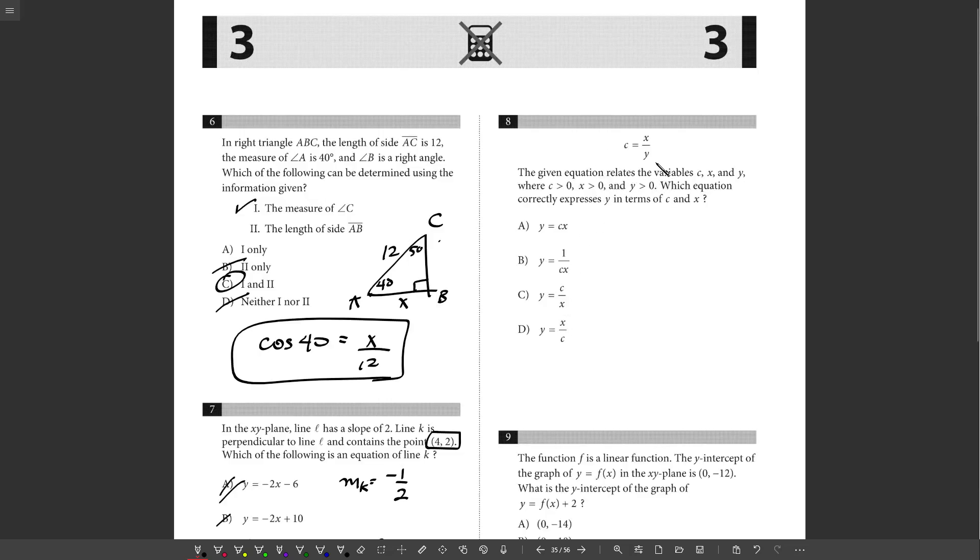Eight, the given equation relates to variables C, X, and Y. These things are true. What expresses Y in terms of C and X? So I just got to rearrange this to get Y by itself. So I have this. I'm just going to start by cross-multiplying. So I'm going to get C times Y is equal to X. Now, I'll divide both sides by C. So I can get Y by itself, and I get X over C. Choice D.